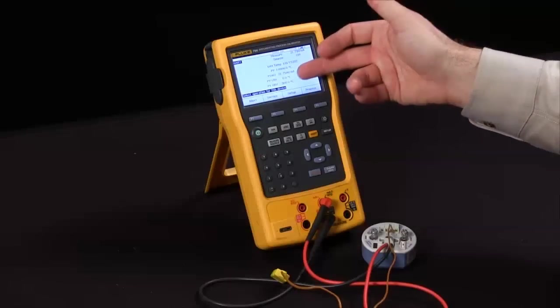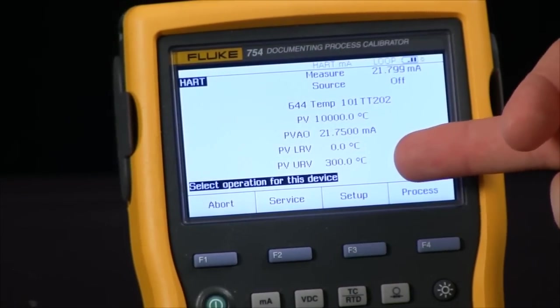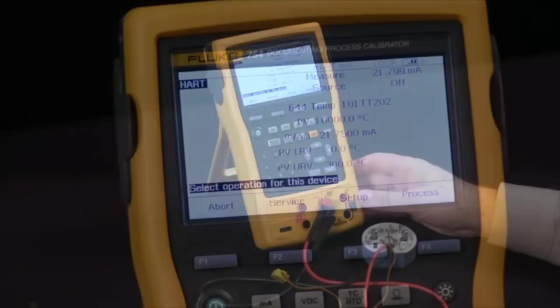We see that as a temperature transmitter, my lower range value is 0 degrees C and my upper range value is 300 degrees C.